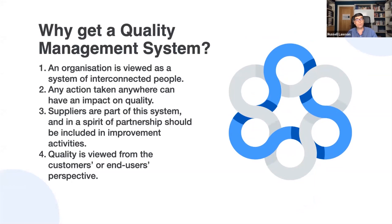Quality management adopts the perspective that all parts of an organization and all its employees can have an impact on quality. Errors made by those in direct contact with customers may be more instantly recognizable, but errors by those with only an indirect role can also have a serious impact. For example, a poor product design may dissatisfy customers, or a clerical error leading to an incorrect invoice can create an angry customer even though that customer never speaks to anyone in accounts.